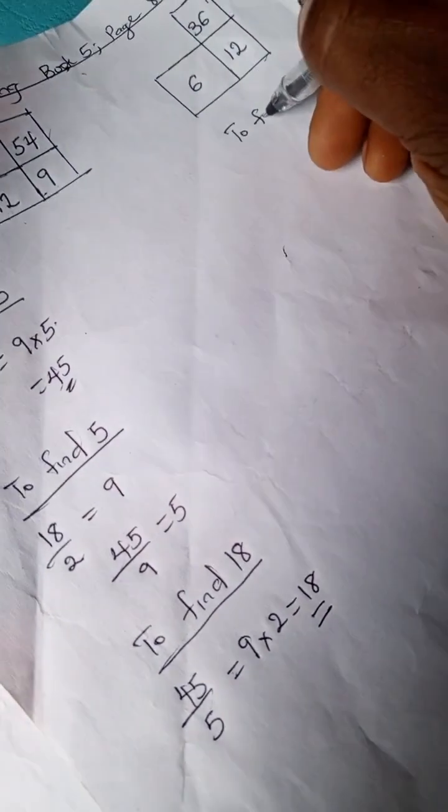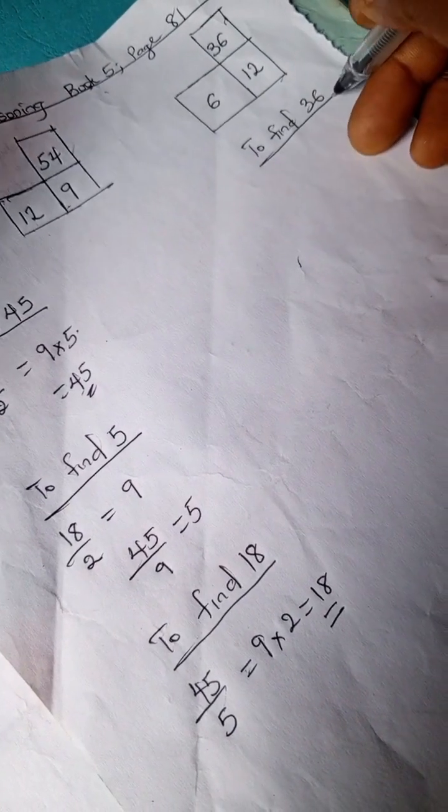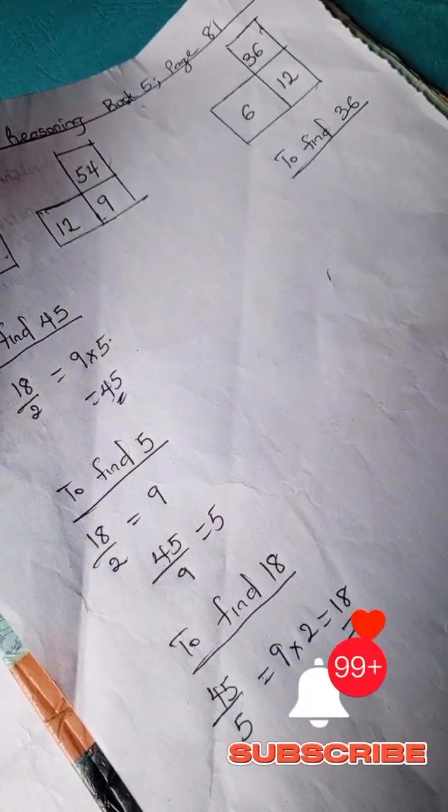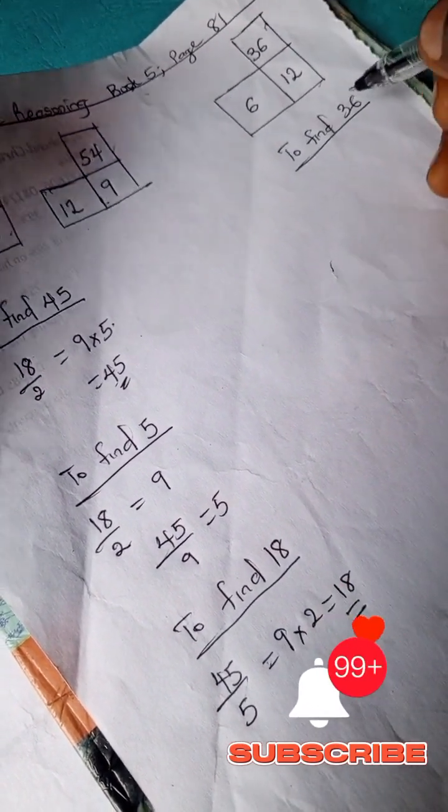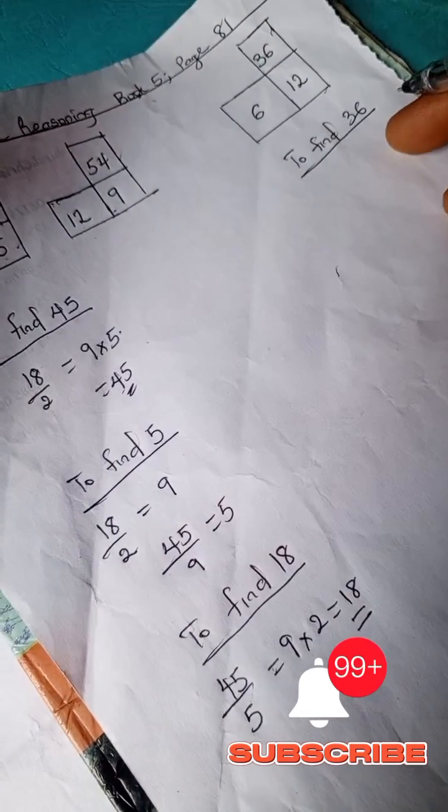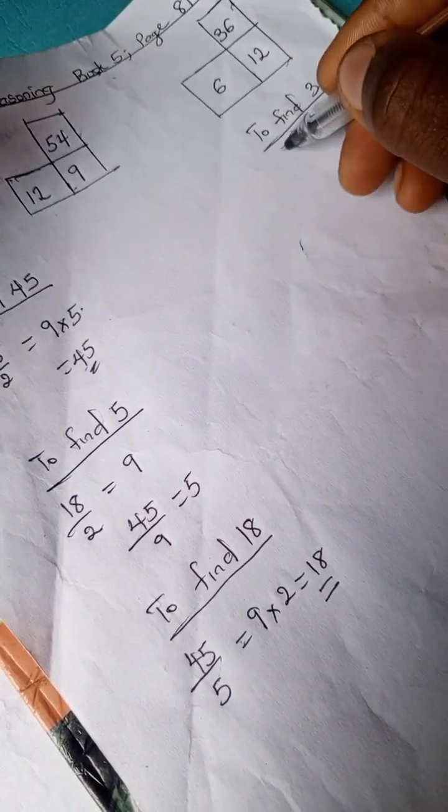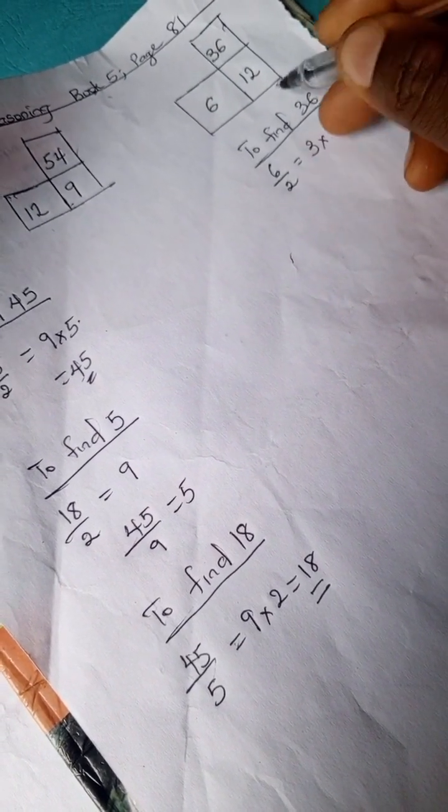To find 36, we have 36 here. So we're going to find 36. We have 6 divided by 2 is 3, 3 times 12